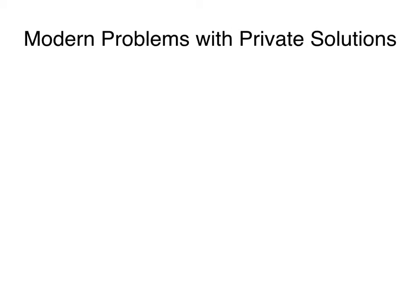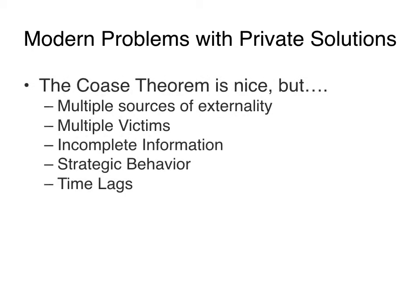This is Part 2 of Chapter 4 for Anderson's Environmental Economics, and we start with Modern Problems with Private Solutions. The Coase Theorem is nice, but there are lots of issues with truly applying it. The Coase Theorem is the idea that private negotiations can lead to efficient outcomes if property rights are clearly defined and the affected parties can bargain with few or no transaction costs.